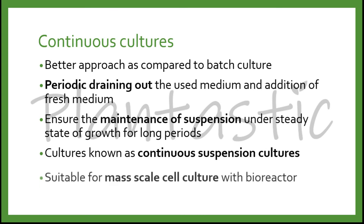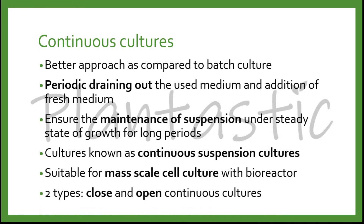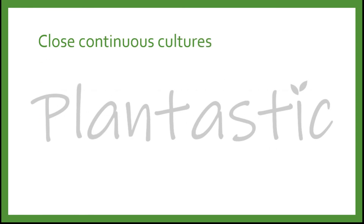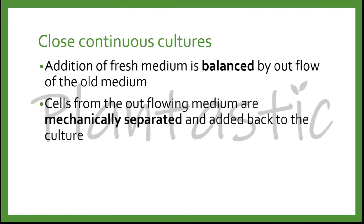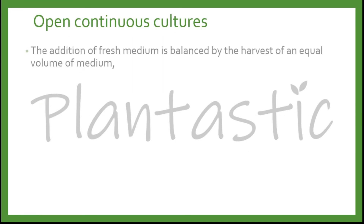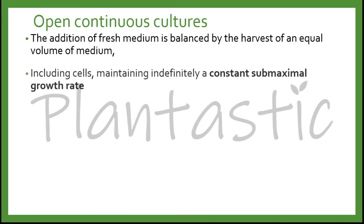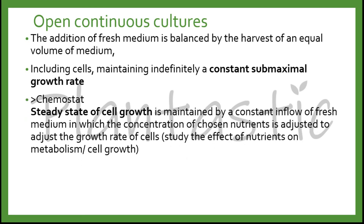Continuous culture is suitable for mass-scale cell culture with a bioreactor and is widely used in research and commercial applications. There are two types of continuous cultures: closed and open. For closed continuous culture, there is special equipment whereby the addition of fresh medium is balanced by the outflow of old medium. The cells from the outflowing medium are mechanically separated and added back into the culture, so the cell biomass continues to increase with age of the culture. For the open continuous culture, the addition of fresh medium is balanced by the harvest of an equal volume of medium including cells, maintaining indefinitely a constant sub-maximal growth rate.